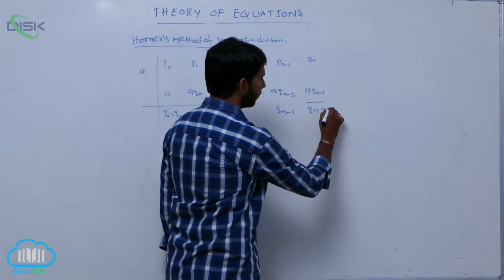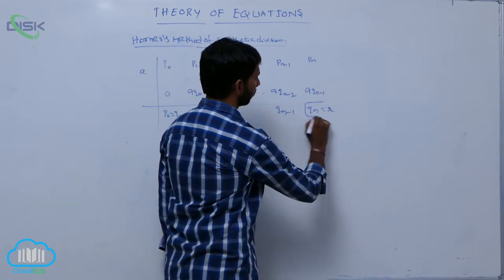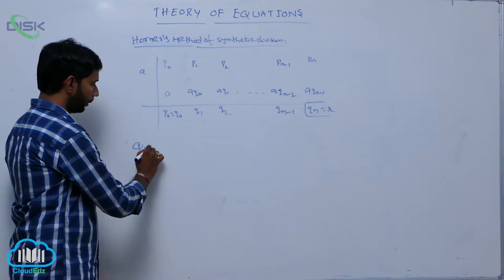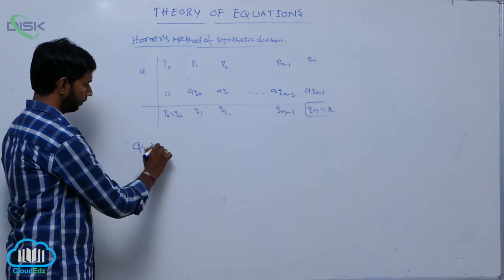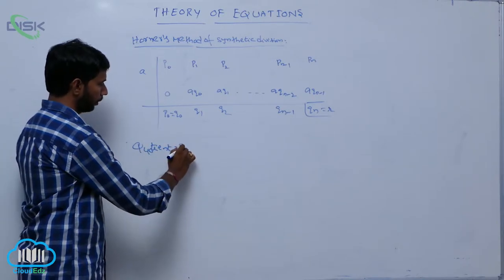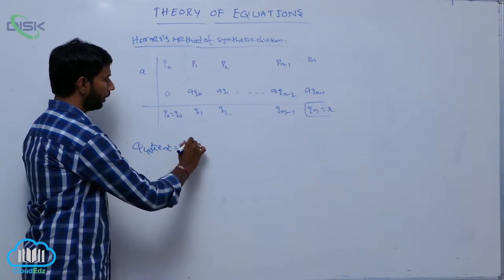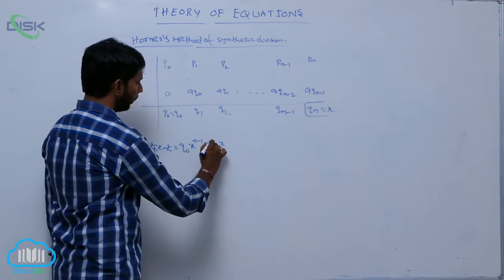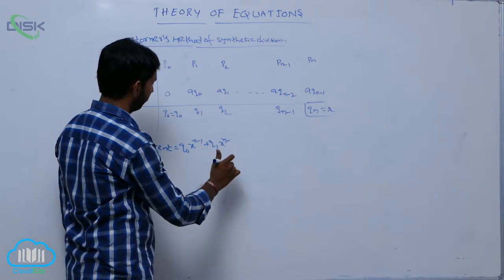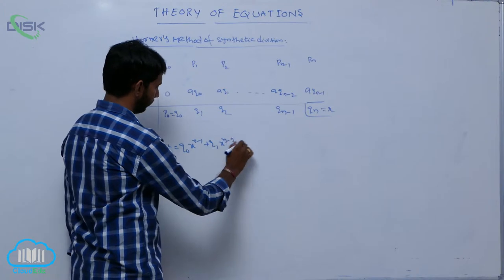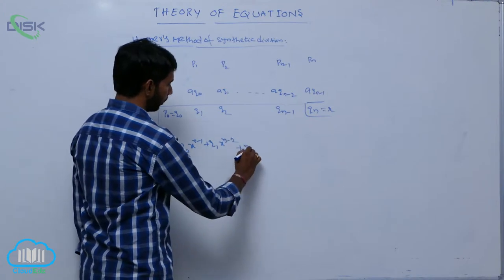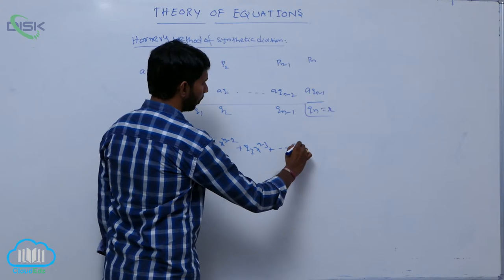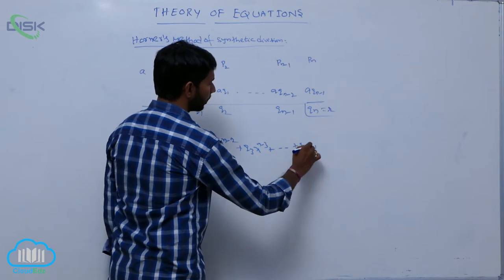Its remainder qn is considered as small r. Therefore, the coefficient is equal to q0·x^(n-1) + q1·x^(n-2) + q3·x^(n-3) + ... + q(n-1).